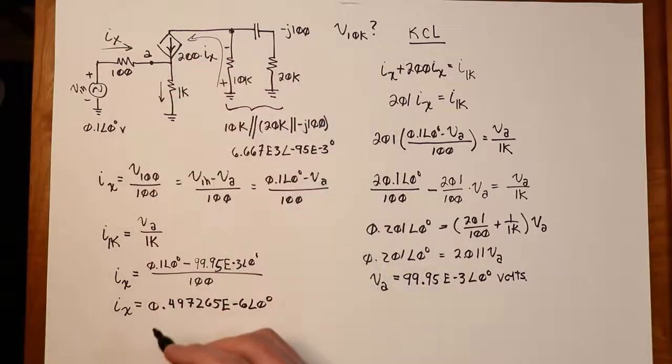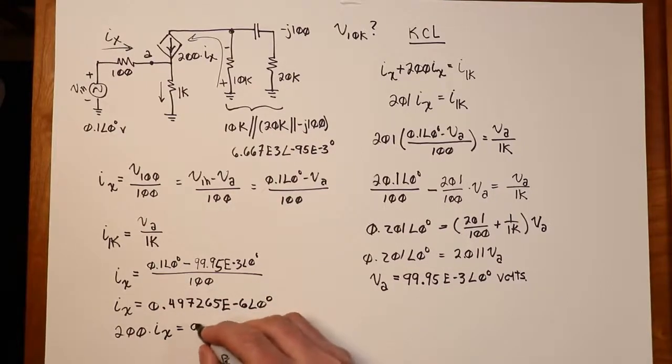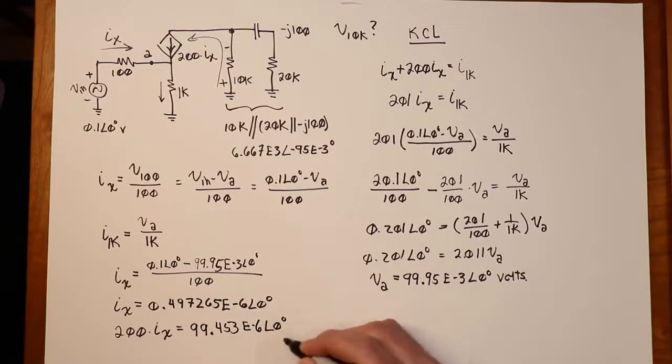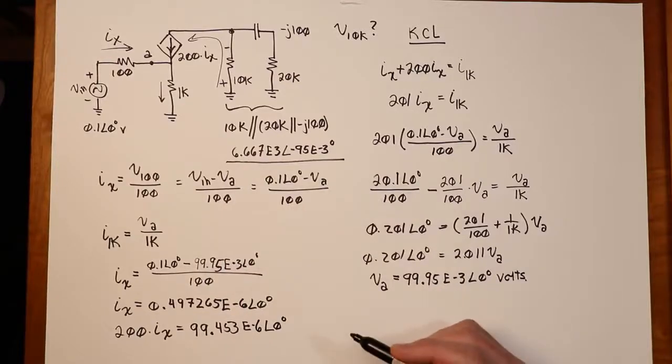So the dependent current source, 200 I X, is just 200 times this value. So when we multiply this through, we're going to wind up with just shy of 100, basically. 99.453 microamps. Take that current, pass it through the impedance we found back here, and we will have our voltage across the 10K.